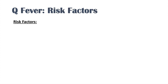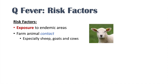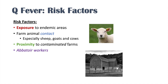Some of the risk factors for getting Q fever include: exposure to endemic areas; farm animal contact, since cows, goats, and sheep are often reservoirs for this bacteria; proximity to contaminated farms — even being downwind from a contaminated farm can lead to infection through inhalation of spores. Abattoir workers and veterinarians are also at high risk, as are individuals exposed to animals in general. Interestingly, there have even been cases where healthcare workers exposed to infected humans have also become infected with Q fever.